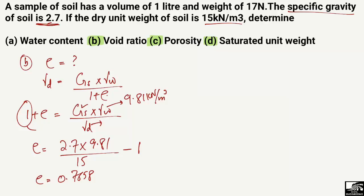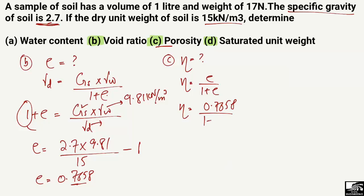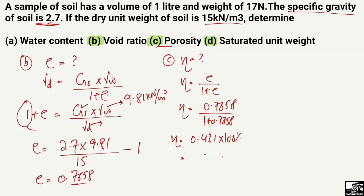Now for porosity, represented by n (or mu), we use the formula: n equals e divided by (1 + e). Substituting the void ratio of 0.7658 divided by (1 + 0.7658), we get 0.431. Multiplying by 100, the porosity is 43.1%.